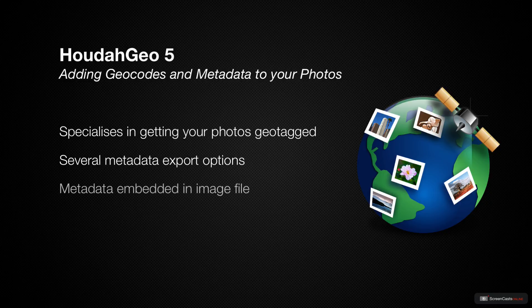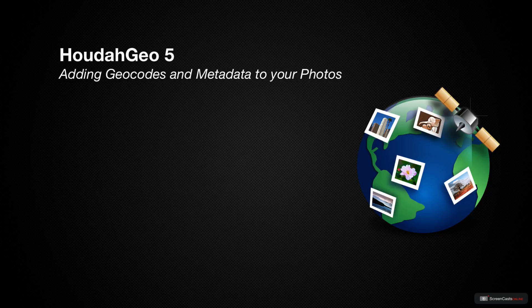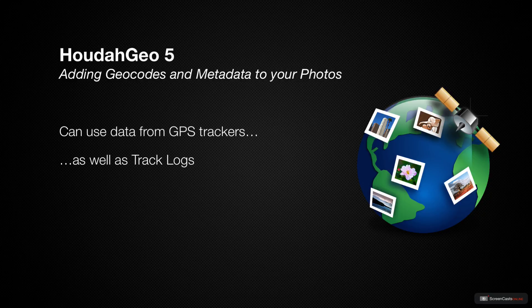HowToGeo embeds the geotags and metadata to the file so that no matter what application you're using, the metadata goes with the file instead of only being available when the application is launched. HowToGeo provides a number of ways to geocode your photos and works with GPS devices, applications, and track codes to make sure you have the exact spot where your photo was taken.